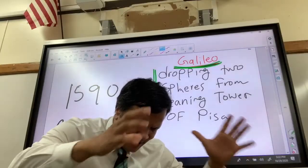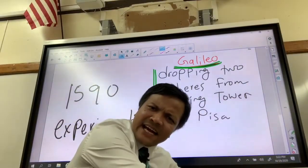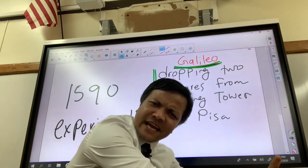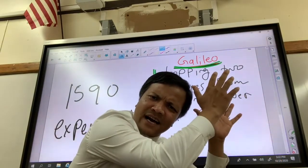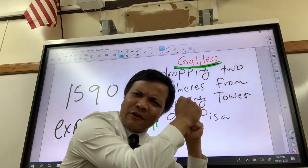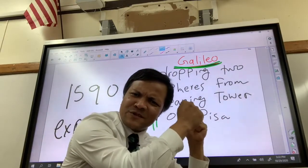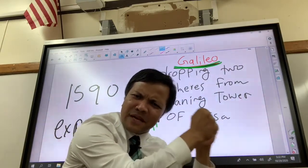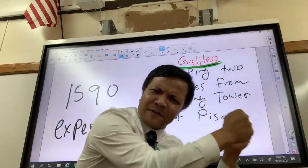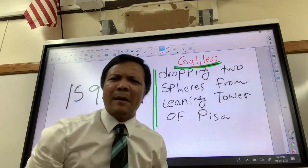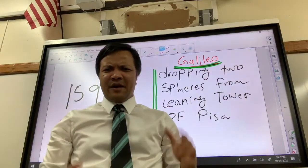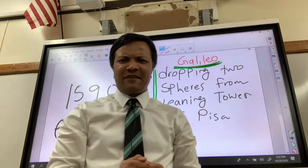Today we are going to use the data collected by Galileo in 1590, from dropping the two spheres, to draw displacement versus time, distance versus time, velocity versus time, speed versus time, acceleration versus time, and magnitude of acceleration versus time graphs. So let's dive in.